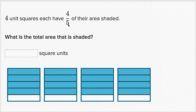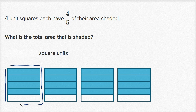Four unit squares each have four-fifths of their area shaded, and we see that here. If we had this whole thing shaded in, that would be a whole, but we only have four-fifths of it shaded in. It's split up into five equal sections, and four-fifths are shaded in.